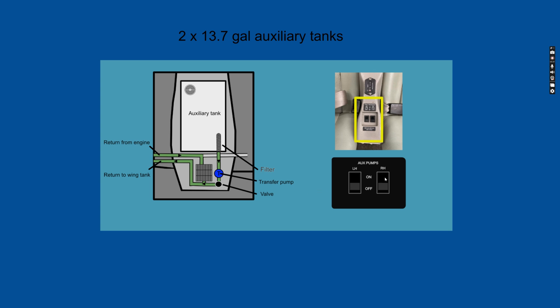When you turn the aux pumps on, you're supposed to do it simultaneously to prevent a fuel imbalance. The pumps will then turn off automatically when either the aux tank is empty, there's a low-level sensor in there, or the wing tank is full. Or if you turn them off, obviously.